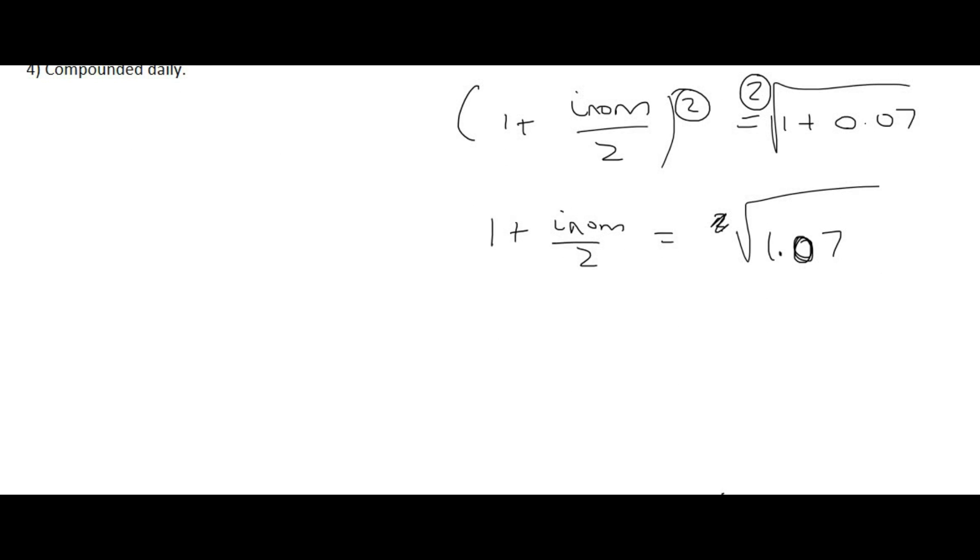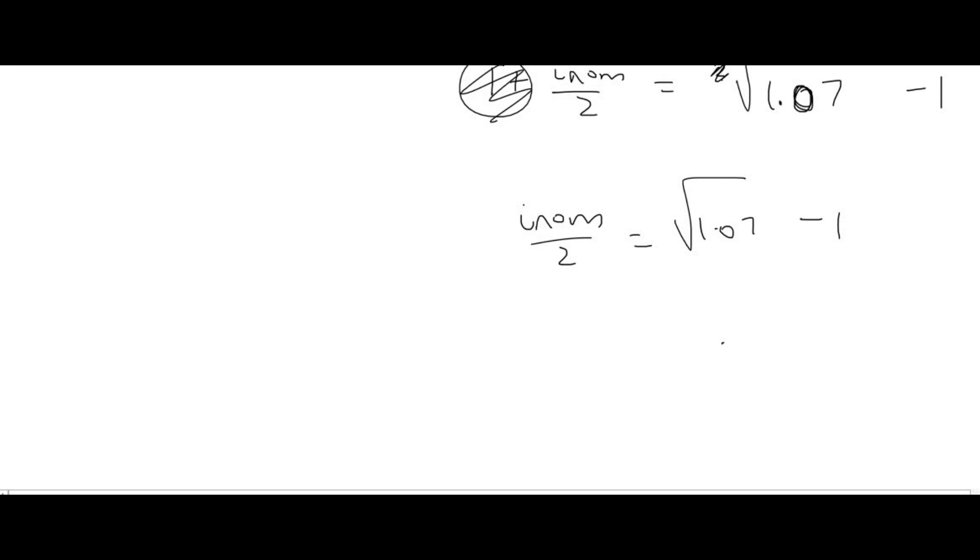Next step would be to bring the plus 1, or this one over here, to the other side, so it becomes a minus 1, but don't put it inside the square root. Then what we have is INUM over 2 equals to the square root of 1.07 minus 1. You then multiply the right-hand side by 2. And then always remember to multiply your final answer by 100, because we're looking for a percentage, and you should get 6.88%.